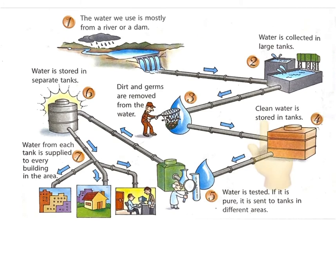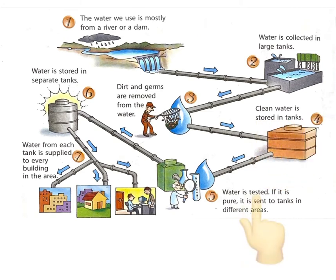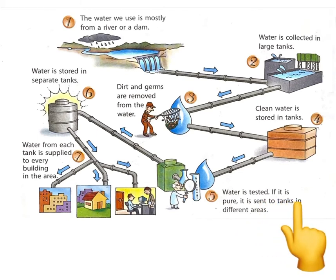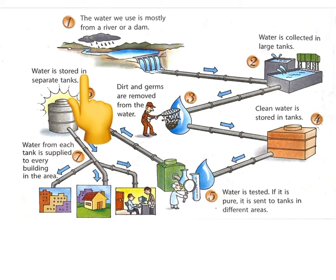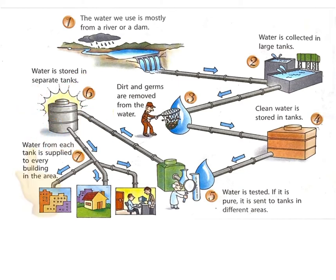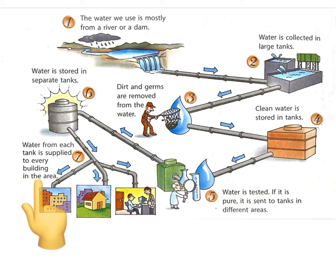Clean water is stored in tanks. Water is tested, and if it is pure, it is sent to tanks in different areas. Water is stored in separate tanks, and water from each tank is supplied to every building in the area.